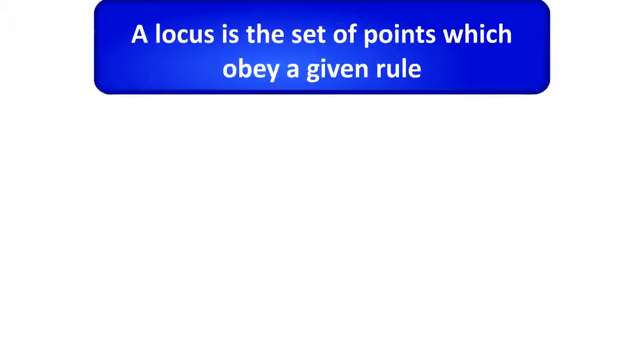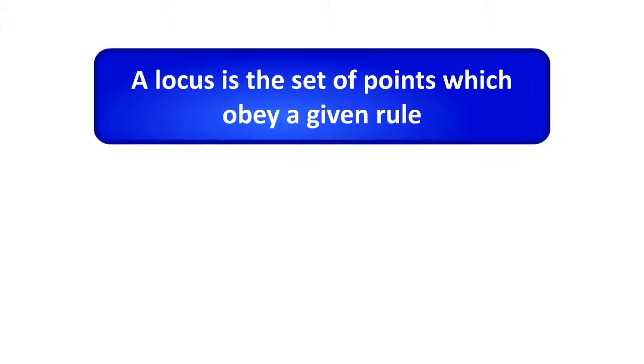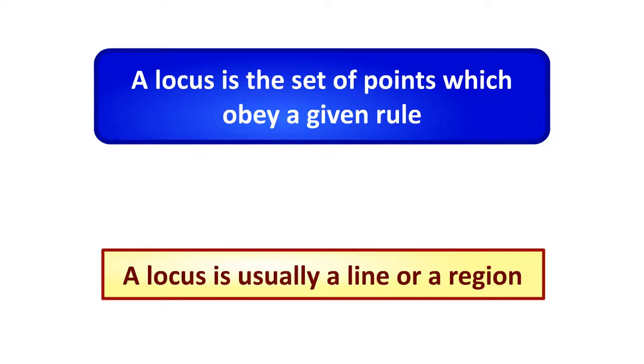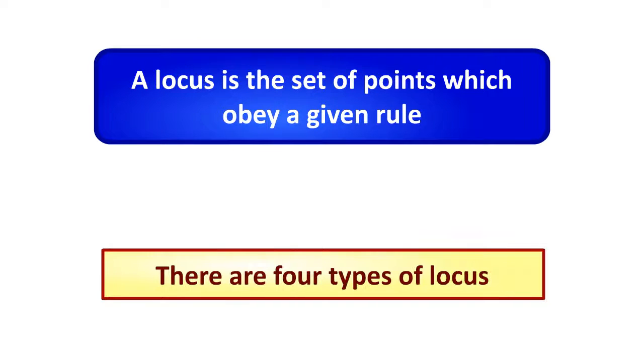Loci. A locus is the set of points which obey a given rule. A locus is usually a line or a region. There are four types of locus.